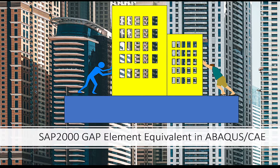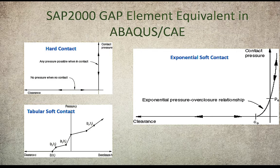This can be used to simulate the closure of a gap and the contact between buildings — how they interact with each other. In the second part of this tutorial I will show you how the gap elements behave under cyclic loading, where you push and then pull the building back.